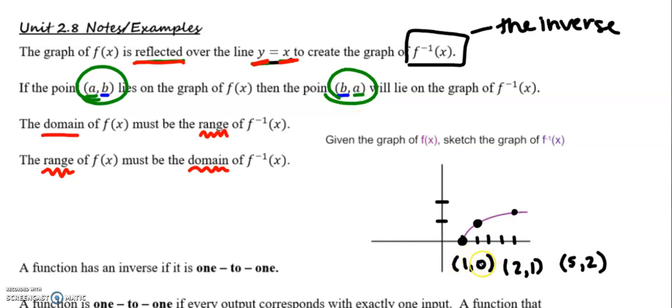The point (1,0) was on the original, which means the point (0,1) lies on the inverse. The point (2,1) was on the original, so the point (1,2) lies on the inverse. And the point (5,2) was on the original, so the point (2,5) is on the inverse. And I can connect my dots in the same way. What I want you to notice is that we were in fact reflecting over the line y=x. These things are mirrored over that line.